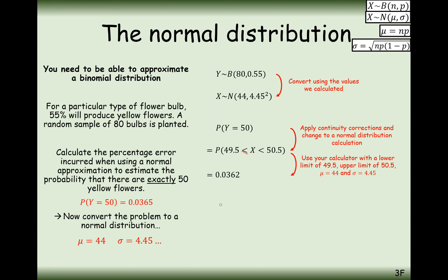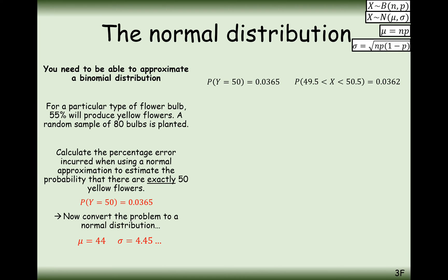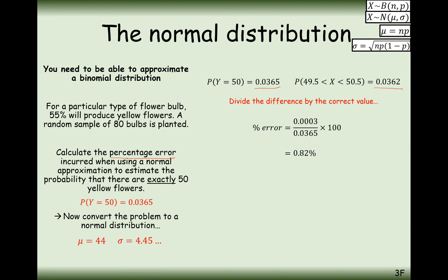The approximation is 0.0362; the correct binomial answer was 0.0365. To find the percentage error, divide the difference between the two values by the correct value and multiply by 100. The difference is 0.0003, divided by 0.0365, times 100 gives 0.82% error — which is pretty good when approximating with an error rate of less than one percent.